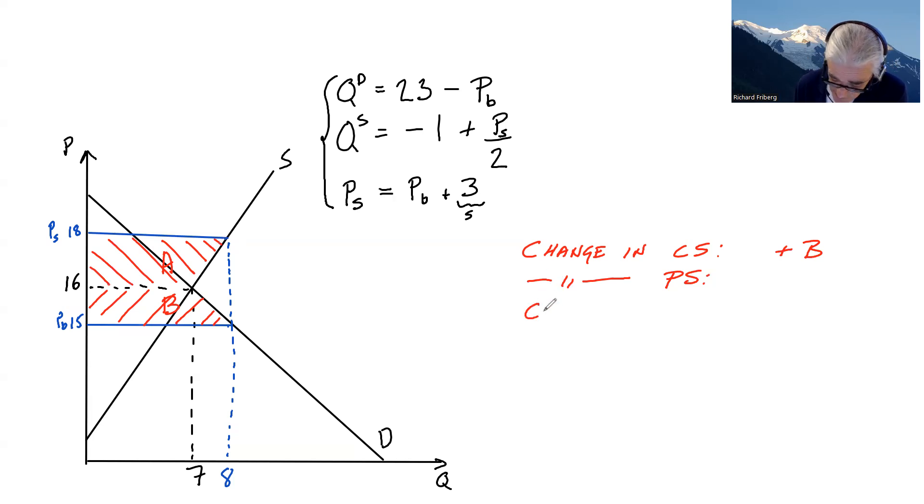There's a cost of the subsidy. We could say change in subsidy that goes from zero to something. What's the cost of the subsidy here? It's a subsidy of 3 euros per unit times 8 units. A cost of the subsidy of 24 euros.